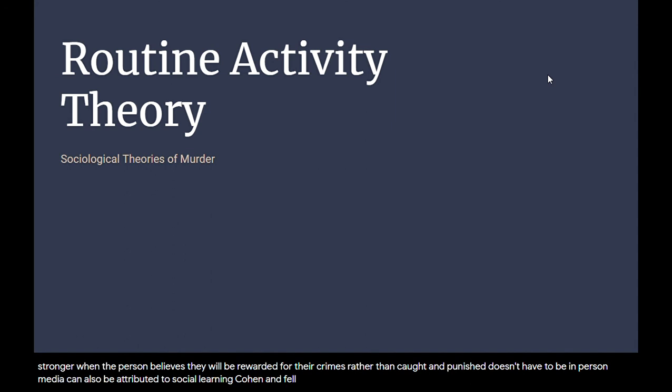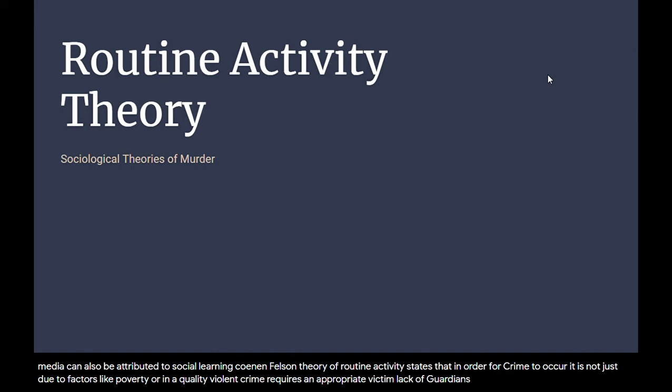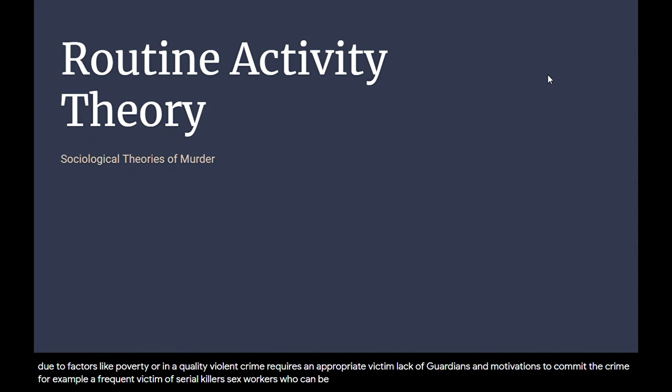Cohen and Felson's theory of routine activity states that in order for crime to occur, it is not just due to factors like poverty or inequality. Violent crime requires an appropriate victim, lack of guardians, and motivation to commit the crime. For example, a frequent victim of serial killers is sex workers, who can be easily lured into a vehicle and have fewer ties to the community should they go missing.